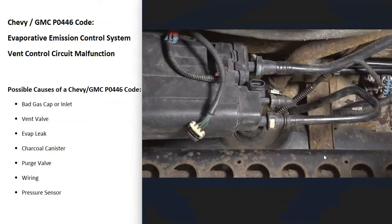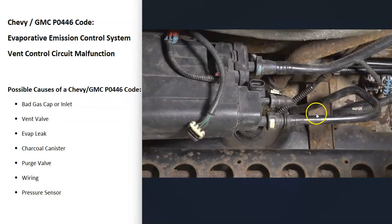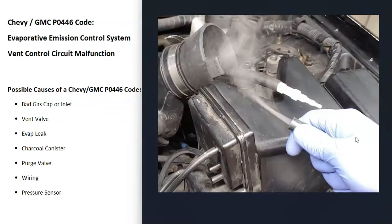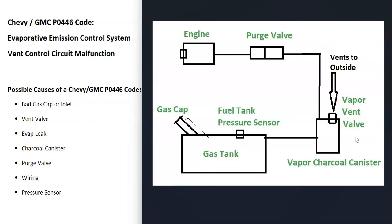If that vent valve checks good, the next thing to do is see if there's a leak somewhere in all the hoses — from the gas cap to the charcoal canister, up to the purge valve at the top of the engine. While you can examine all the hoses for cracks, looseness, or damage, it can be difficult to find a leak in EVAP systems. If you took it to a mechanic, they'd likely use a smoke machine, feeding smoke into the EVAP system — wherever the smoke comes out is where the leak is. There are low-cost smoke machines on Amazon or eBay, and you can even make one yourself for around $5–$10.